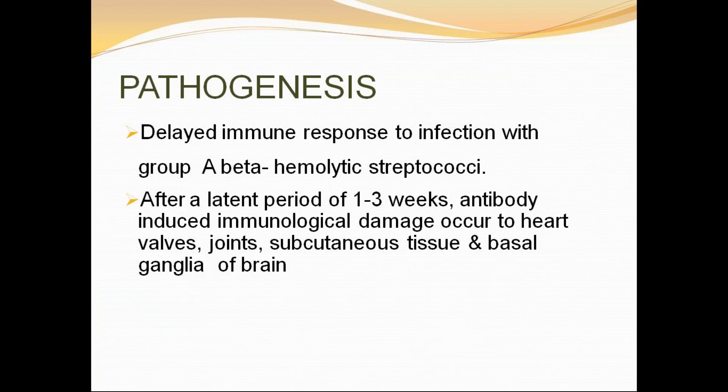Coming to pathogenesis — this is an immune response involving molecular mimicry and antigen-antibody complexes. It is an immunologically mediated response: a delayed immune response to group A beta-hemolytic streptococcus. After a latent period of one to three weeks, antibody-induced immunological damage occurs to heart valves, joints, subcutaneous tissues, and basal ganglia of the brain — explaining why chorea, carditis, arthritis, and subcutaneous nodules occur.